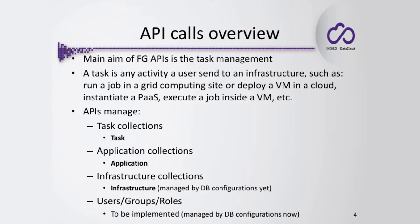In the naming convention of the Future Gateway, what we were thinking of at the time of grids became tasks. We have API calls to manage tasks in the form of a collection. A task is linked with an application — a task is an instance of an application. An application needs information to execute on a physical infrastructure, and this information is stored inside the infrastructure collection.